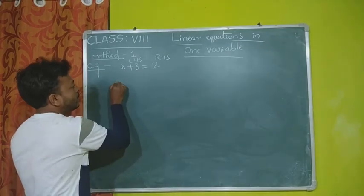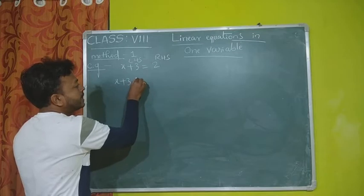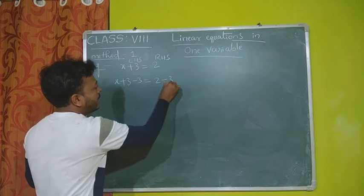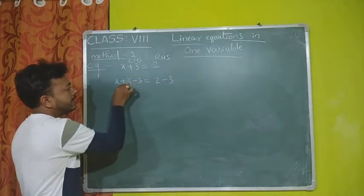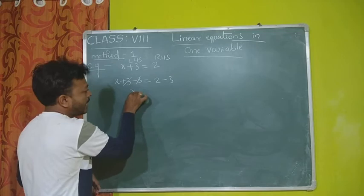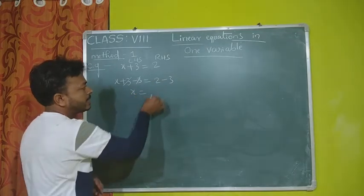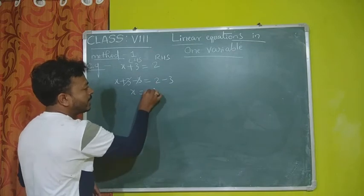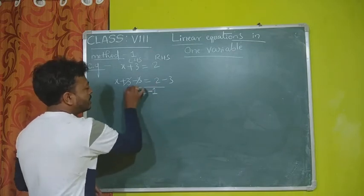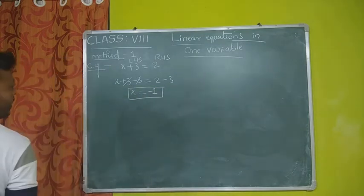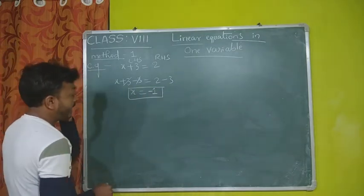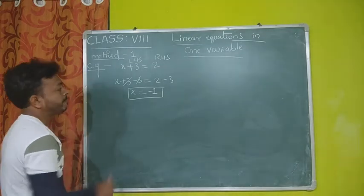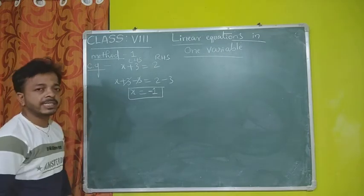So in LHS I give minus 3, and on RHS also we give minus 3. Now plus 3 minus 3 gets cancelled, and x remains. On the right side, 2 minus 3: bigger number sign is minus, so 3 minus 2 is 1, which gives minus 1. So the solution of x, or the root of x, is minus 1.